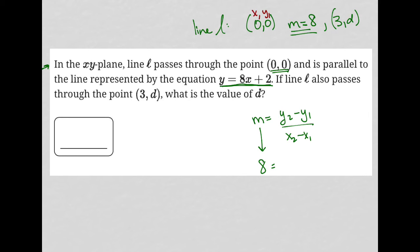This is my x1, y1. This is my x2, y2. So I'll have d minus 0 for y2 minus y1, and I will have 3 minus 0 for x2 minus x1. So this will be equal to d over 3.